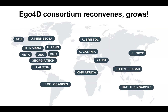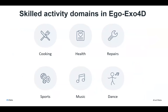The consortium from before came together again, even growing in membership, to establish the EgoXO4D dataset focused on skilled activities. The domains we chose include cooking, health (like first aid), repairs (particularly bicycles), sports (basketball, soccer), bouldering, music, and dance. These all require either physical display of skill or procedural skill — where certain steps must be taken to achieve a goal.